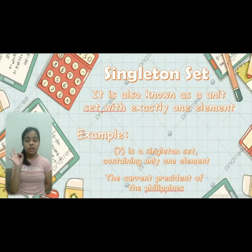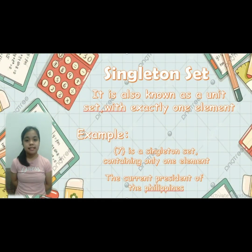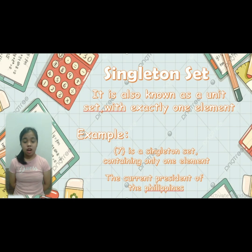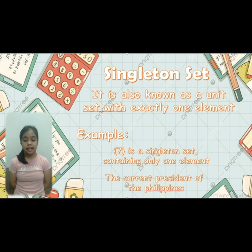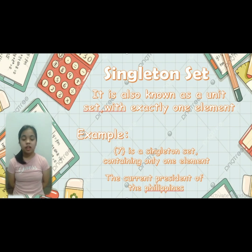The third type of set is the singleton set. It is also known as a unit set with exactly one element. For example, {70} is a singleton set containing only one element. Another example is the current president of the Philippines.